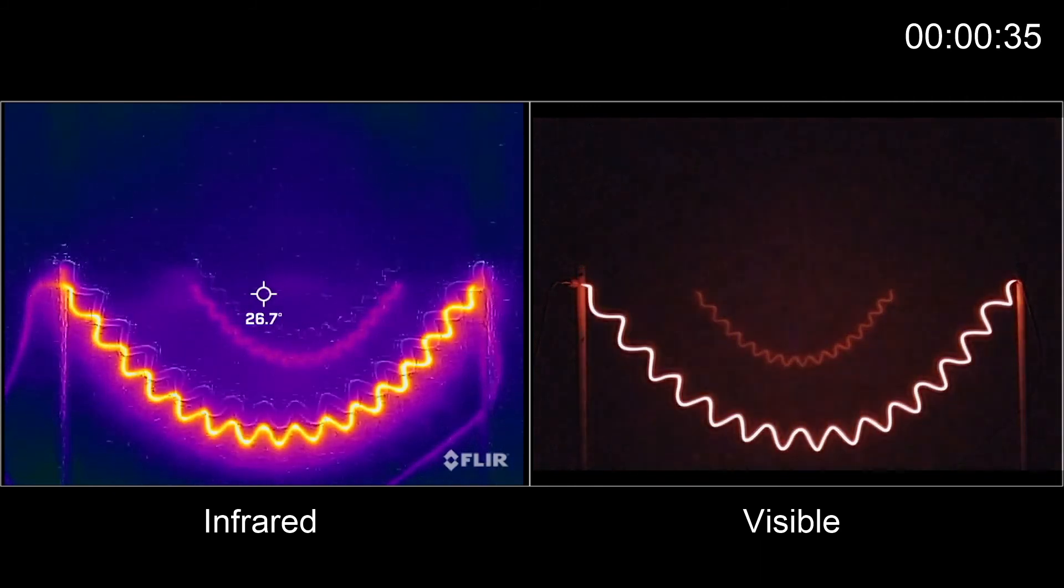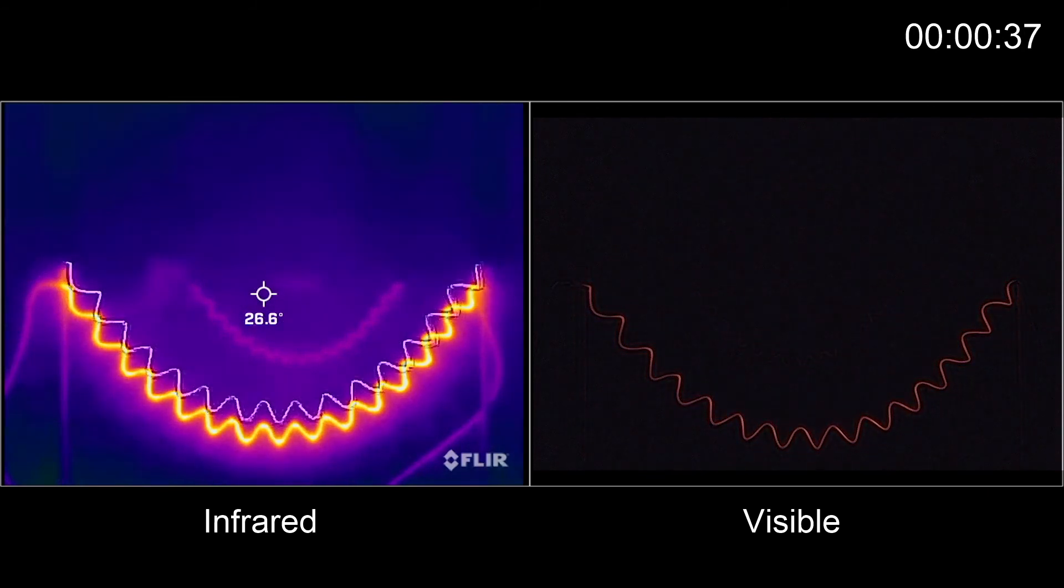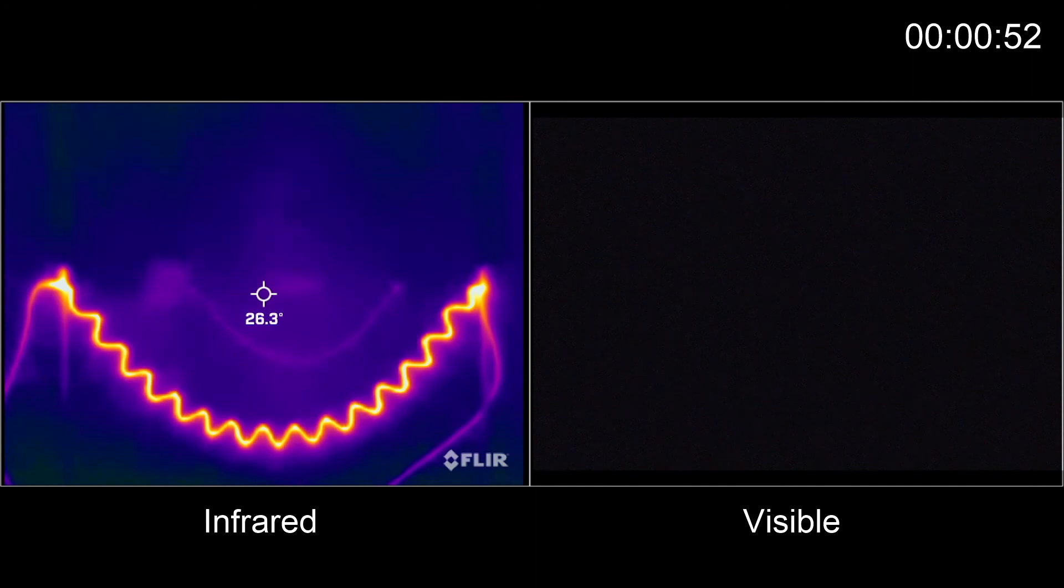When we turn off the current, the coil cools and the visible light quickly goes out. However, with our infrared camera, we can still see that the coil is hot long after it stops glowing and visible. This is why infrared observations are useful in astronomy. They allow us to observe objects that we are not able to see in visible light.